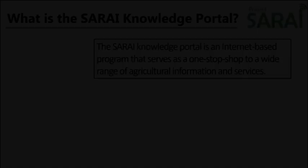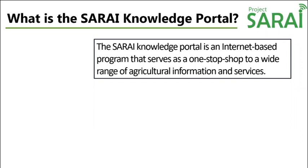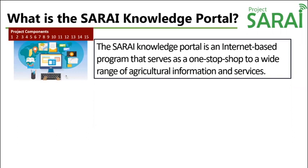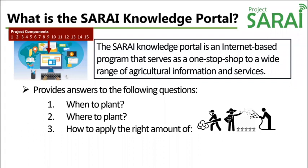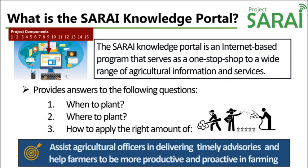What is the Sarai Knowledge Portal? The Sarai Knowledge Portal is an internet-based program that serves as a one-stop shop to a wide range of climate smart agricultural information and services. It serves as an integration tool that allows the 15 Sarai components to share their output to the public. The portal answers: when to plant to minimize damage from natural disasters, where to plant to find a suitable location for their crops, and how to apply the right amount of pesticide, fertilizers, and water for irrigation. In general, we aim to assist provincial and municipal agricultural officers in delivering timely advisories and help our farmers to be more productive and proactive in attaining maximum yield and profit.